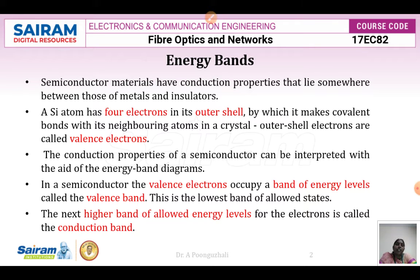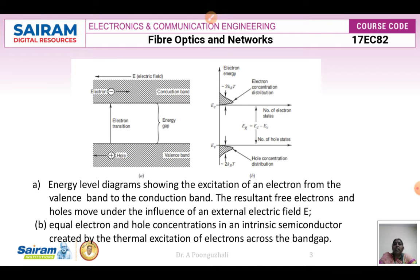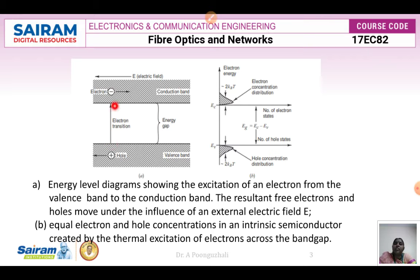The next highest band of allowed energy levels for electrons is called the conduction band. The energy level diagram shows the excitation of electrons from the valence band to the conduction band. In the valence band we have a set of electrons, and in the conduction band we have holes. When an external force is applied to the semiconductor material, electrons are excited from the valence band to the conduction band. A hole is created in the valence band and the electron concentration increases in the conduction band.